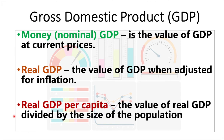Real GDP per capita is the value of real GDP divided by the size of the population. Countries with identical real GDP may have very different real GDP per capita depending on their populations. China and the US are the top two economies in the world as measured by real GDP. However, the real GDP per capita — or per head — in the USA is by far much larger due to the size of the Chinese population.